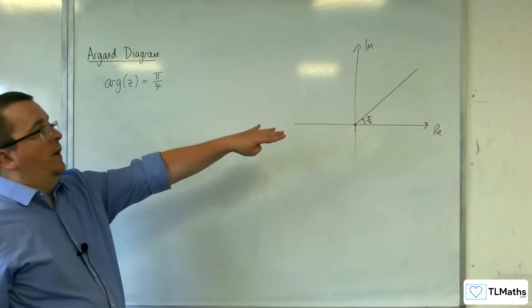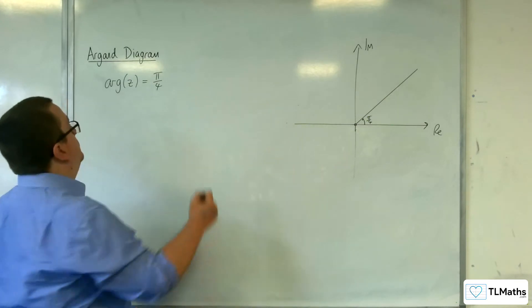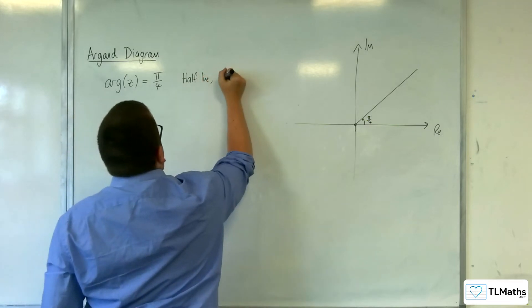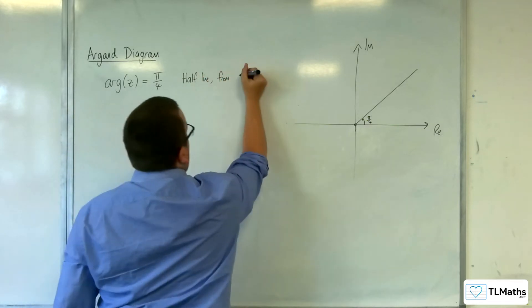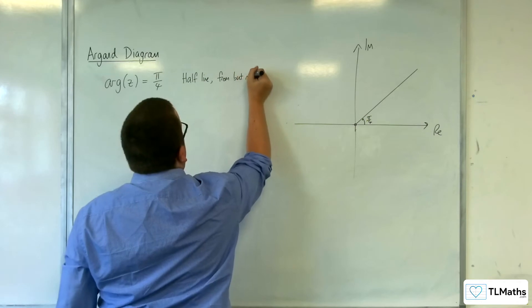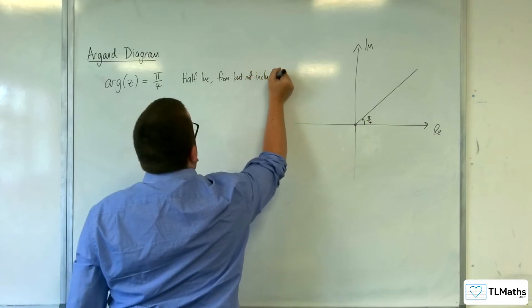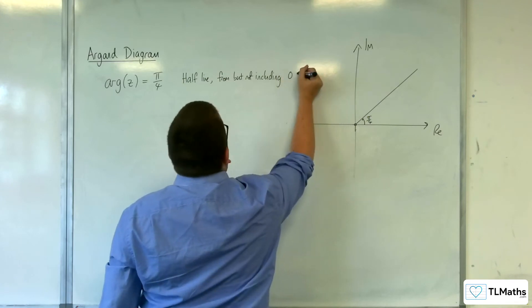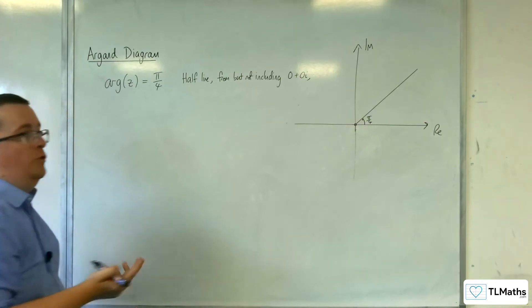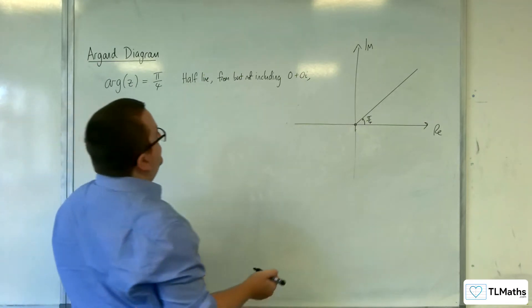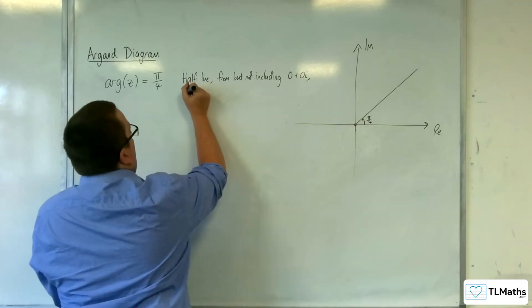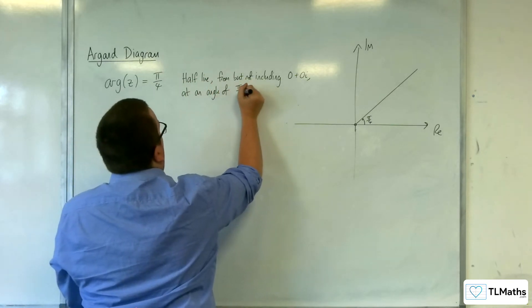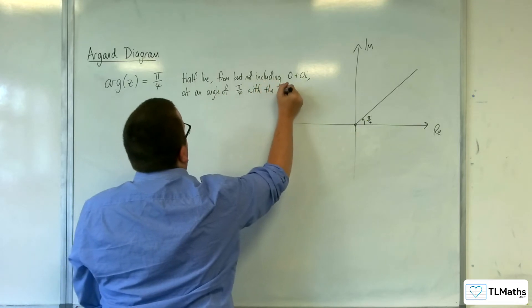So this is a half line from, but not including, 0 plus 0i, or just 0. At an angle of pi over 4 with the positive real axis.